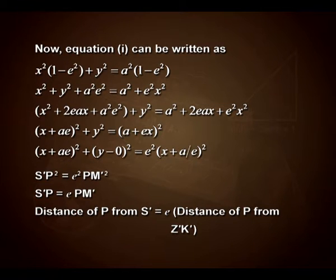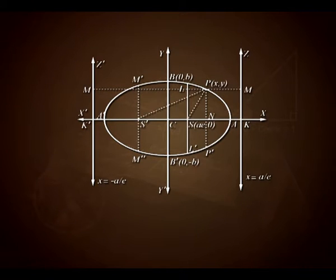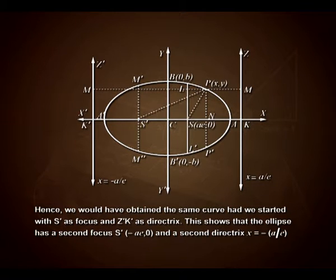The distance of P from S' equals e times the distance of P from Z'K'. We can see in the figure points A, A', B, B', and C at the center, with fixed point P(x, y), and points N, S, and L, L' meeting at S(ae, 0). Hence we would have obtained the same curve had we started with S' as focus and Z'K' as directrix. This shows that the ellipse has a second focus S'(−ae, 0) and a second directrix x = −a/e.